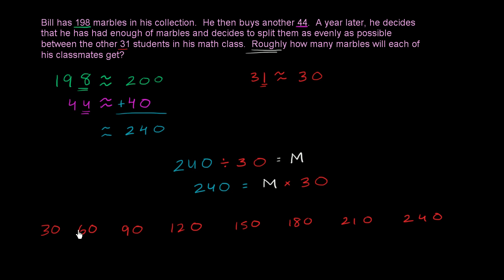So what is this? This is 30 times 1, 2, 3, 4, 5, 6, 7, 8. So we know that 240 is equal to 30 times 8.